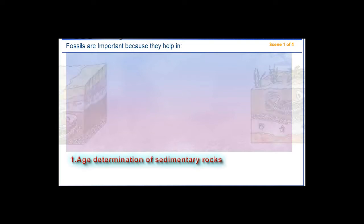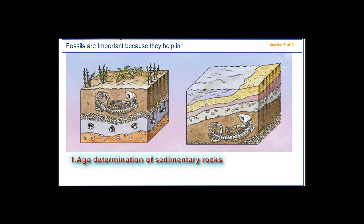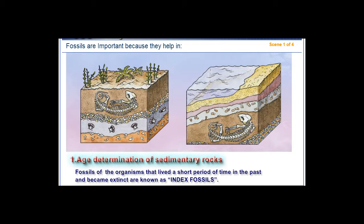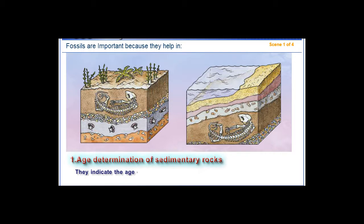Fossils are important because they help in: 1. Age Determination of Sedimentary Rocks. Fossils of organisms that lived a short period of time in the past and became extinct are known as index fossils. They indicate the age of sedimentary rocks because the age of rocks is the same as the age of fossils.